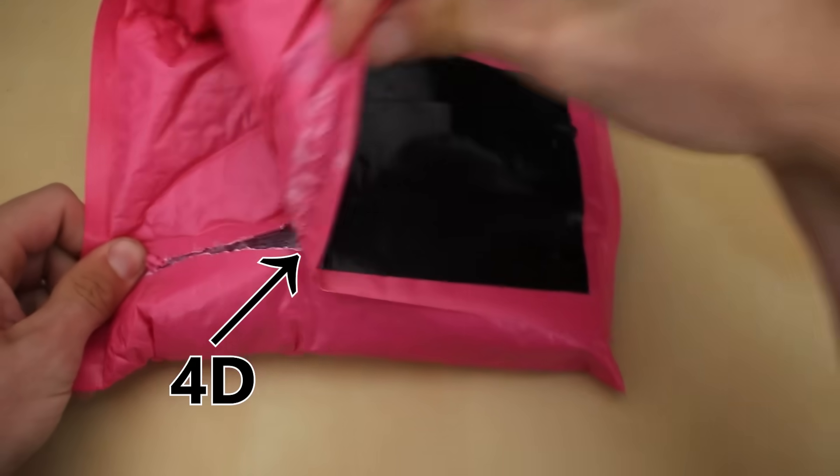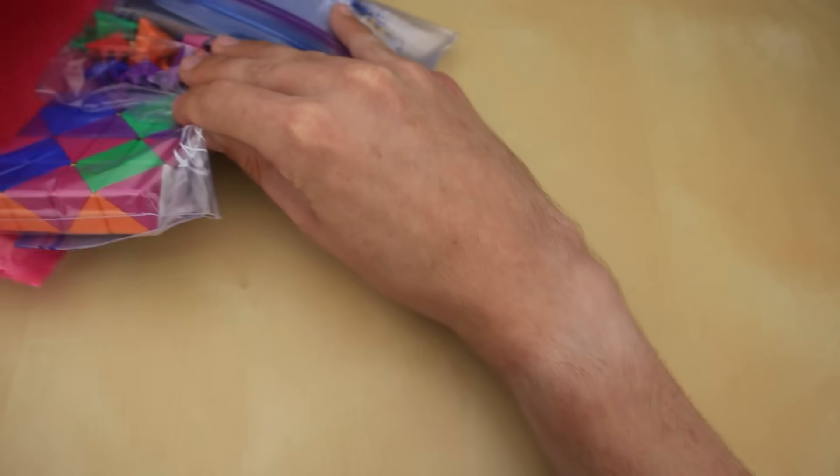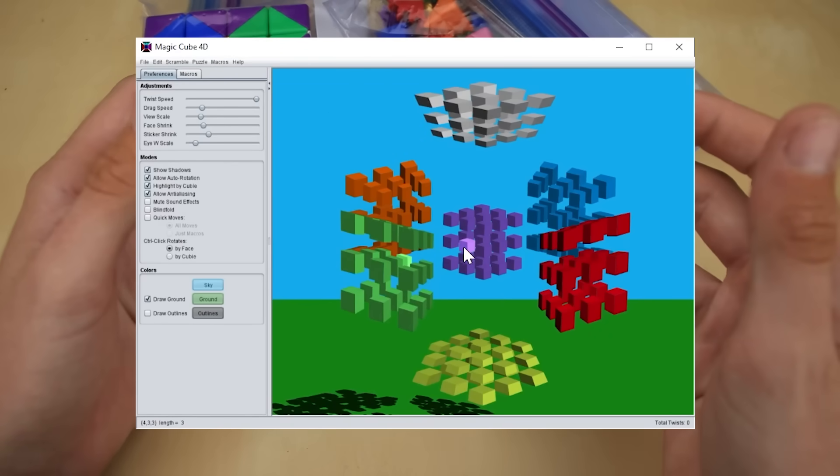Inside this package is a four-dimensional Rubik's Cube, at least kind of. Let me explain. You may have already seen the four-dimensional version of a Rubik's Cube, but simulated on a computer.